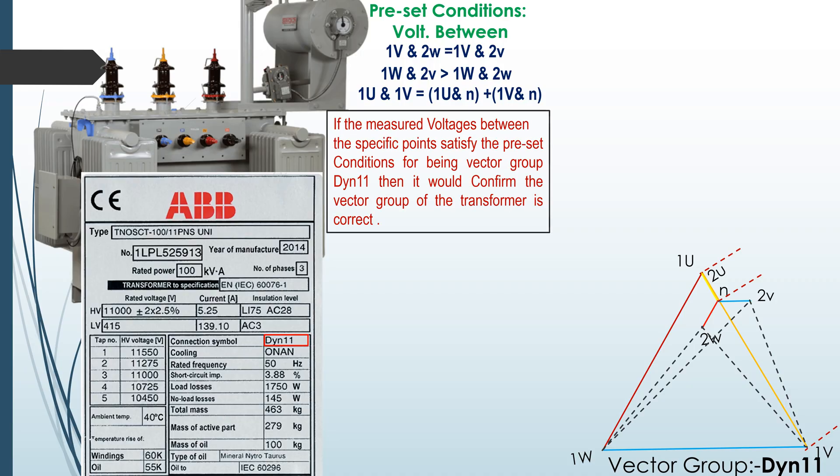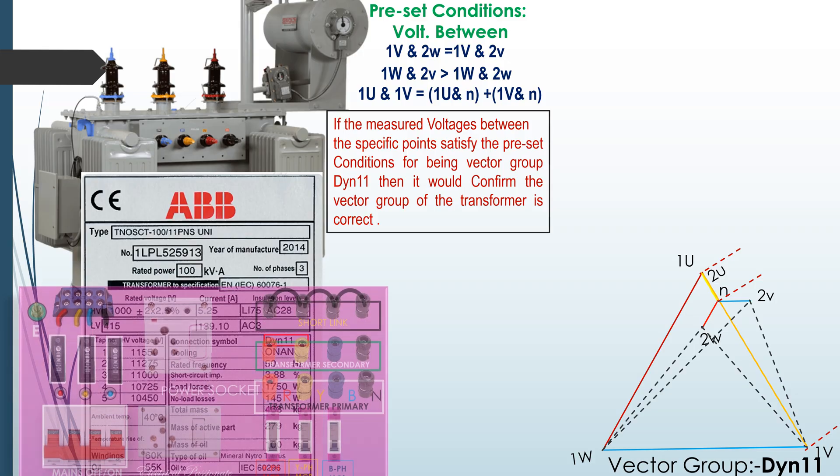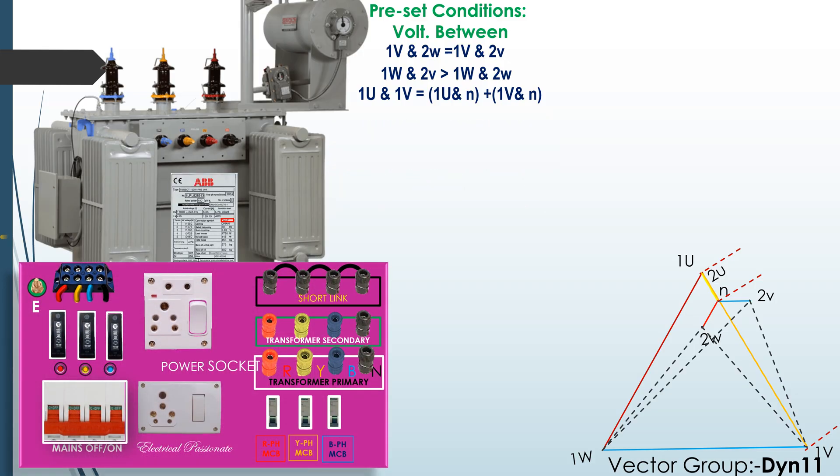If the measured voltage between specific points satisfy the preset conditions for being vector group DYN11, then it would confirm that the vector group of transformer is correct.